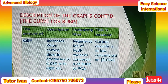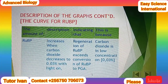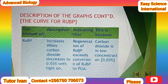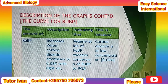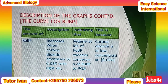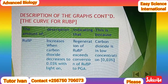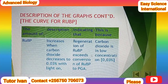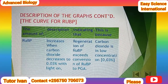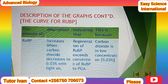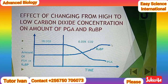Yet, the reaction that leads to RUBP regeneration is independent of the concentration of carbon dioxide, because PGA just requires ATP, which comes from light. And we saw that a lot of PGA molecules are formed even in little carbon dioxide concentrations. Therefore, we shall regenerate more RUBP in reduced carbon dioxide concentrations, and we shall see an overall increase in the amount of RUBP.